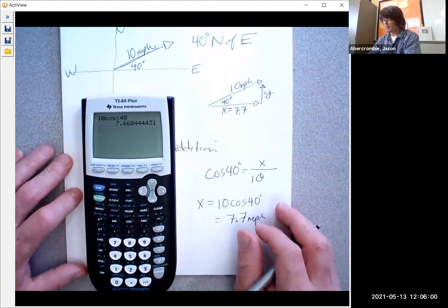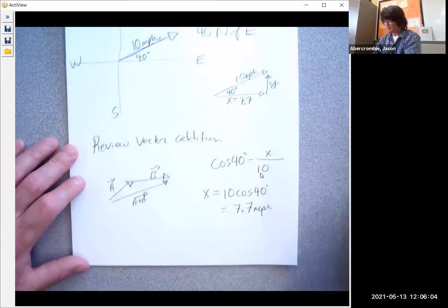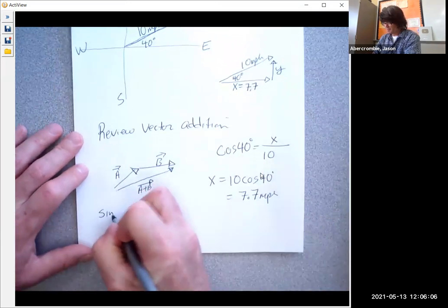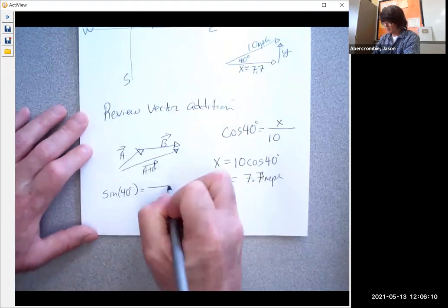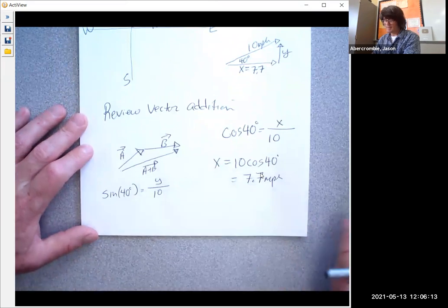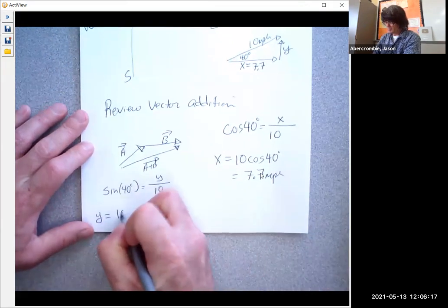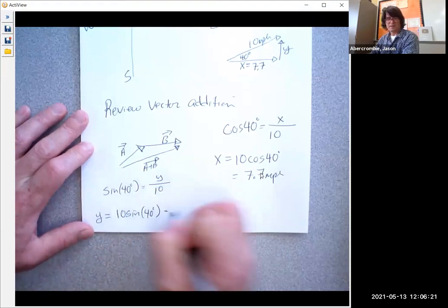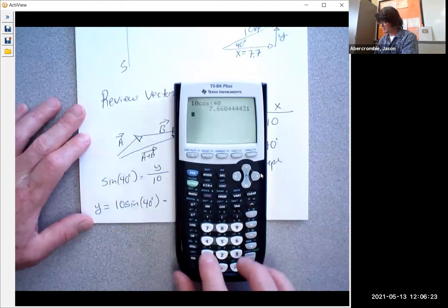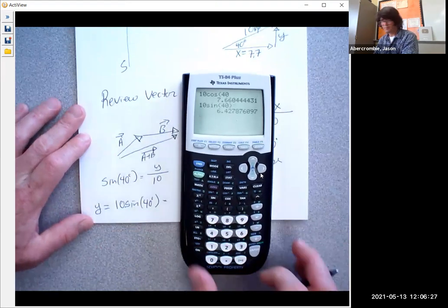Just like that. And then for the y, y is opposite and this is hypotenuse. So we're going to use sine. Sine of 40 equals y over 10. To solve for y, you multiply by 10. So y is 10 sine 40. On the calculator, you can just do 10 sine 40, and that's 6.4.